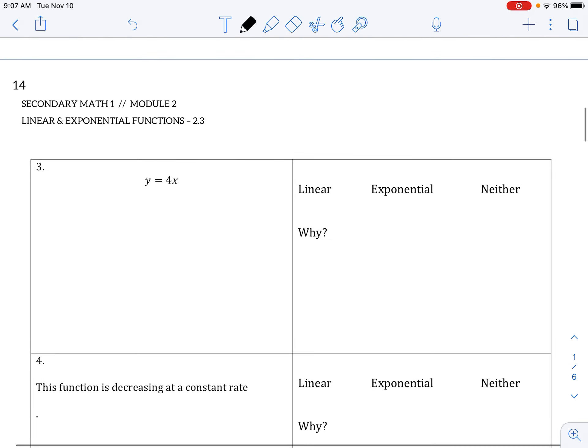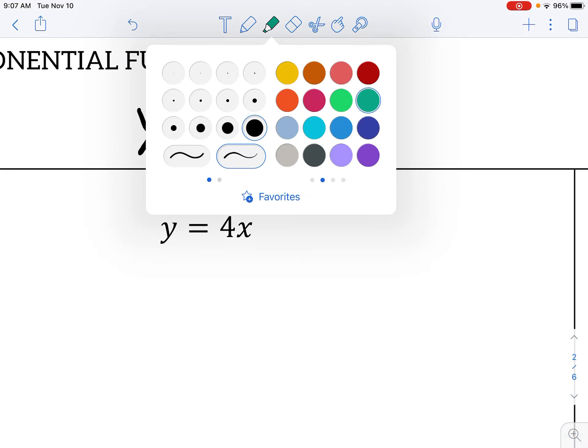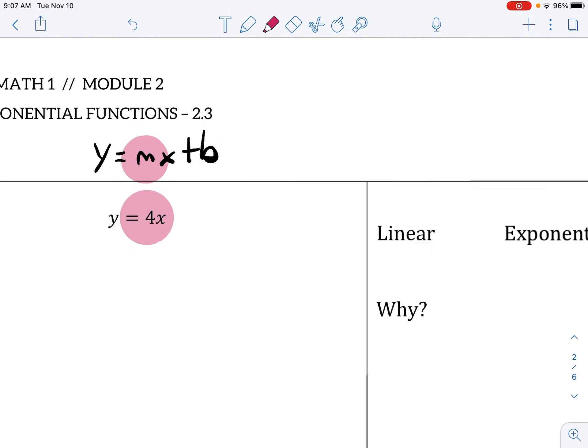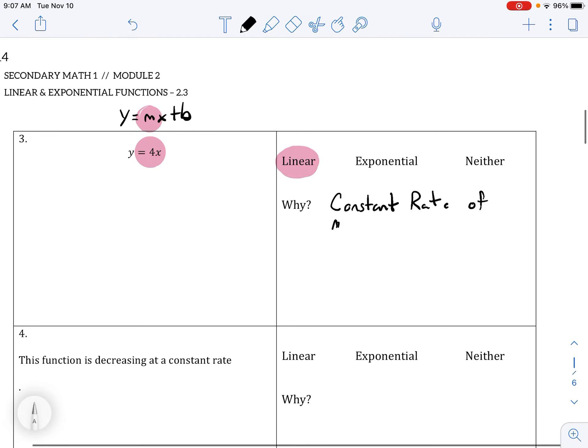Okay, number three just gives us an equation y equals 4x. Now you might remember y equals mx plus b—that's slope intercept form, and our slope or rate of change is simply 4. So this is linear, and you could say it has a constant rate of change and it's 4 over 1.